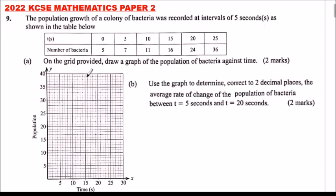On the grid provided, draw a graph of the population of the bacteria. Our grid is already labeled — the y-axis representing the population and the x-axis representing the time in seconds. From the table, we read the values: when t is 0, the number of bacteria is 5. When t is 5 seconds, the number is 7. One square represents one unit, so 7 is plotted there.